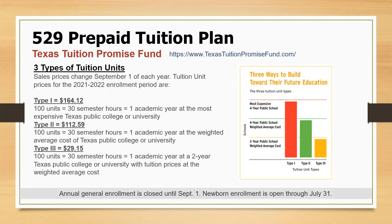Enrollment is closed right now, but if you have a new baby this year it's open until July 31st. For kids one year and older, they can sign up starting September 1st. The Type 1 and Type 2 costs will likely change — probably increase — but if you have a new baby this is perfect timing and you can still use these current numbers.